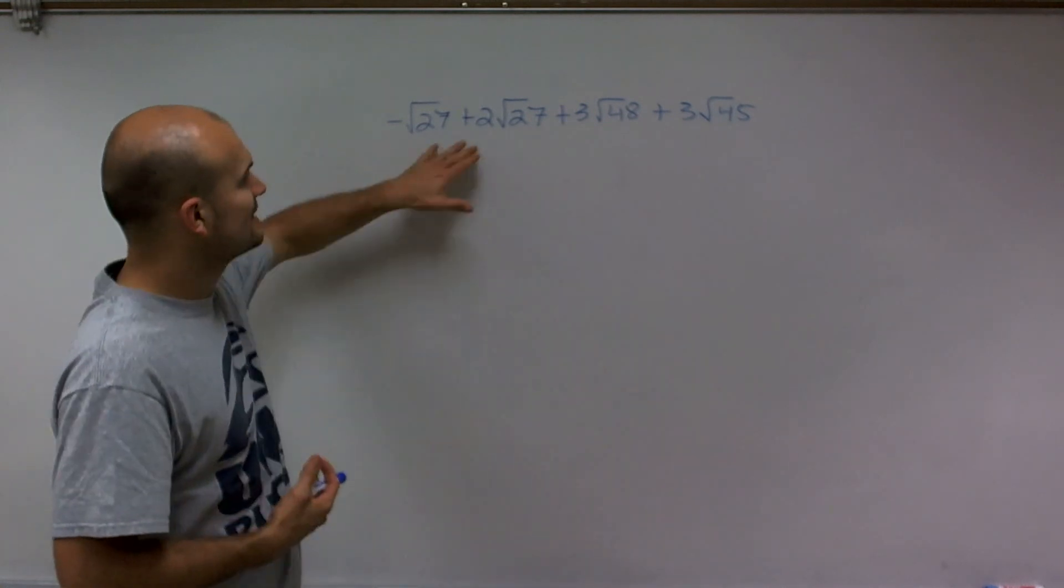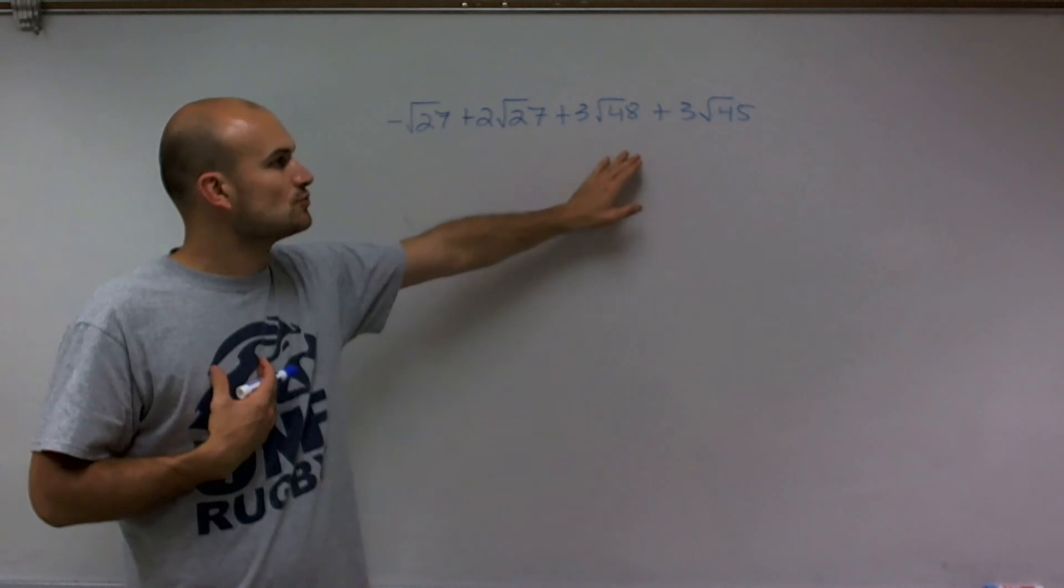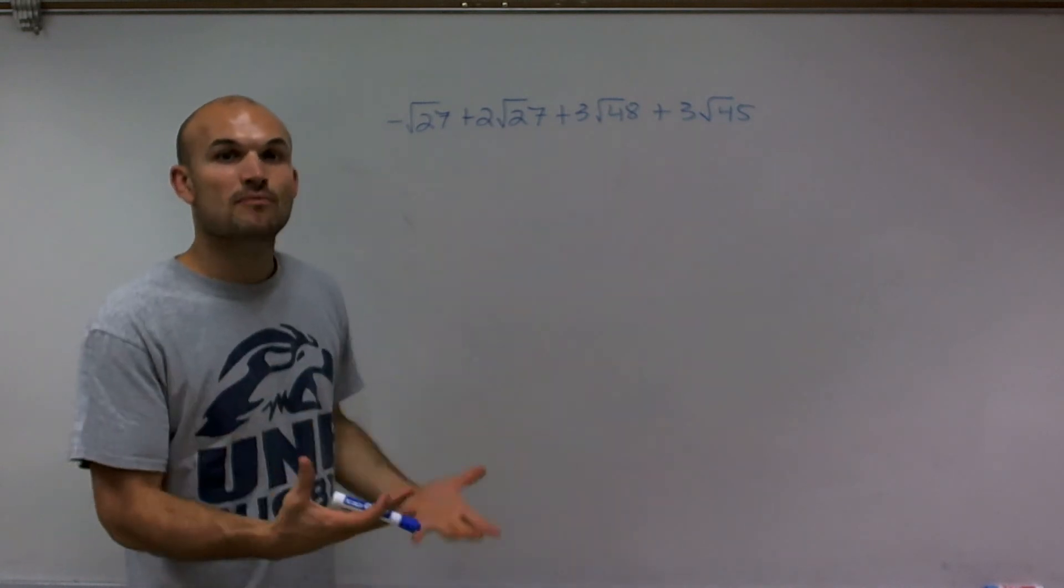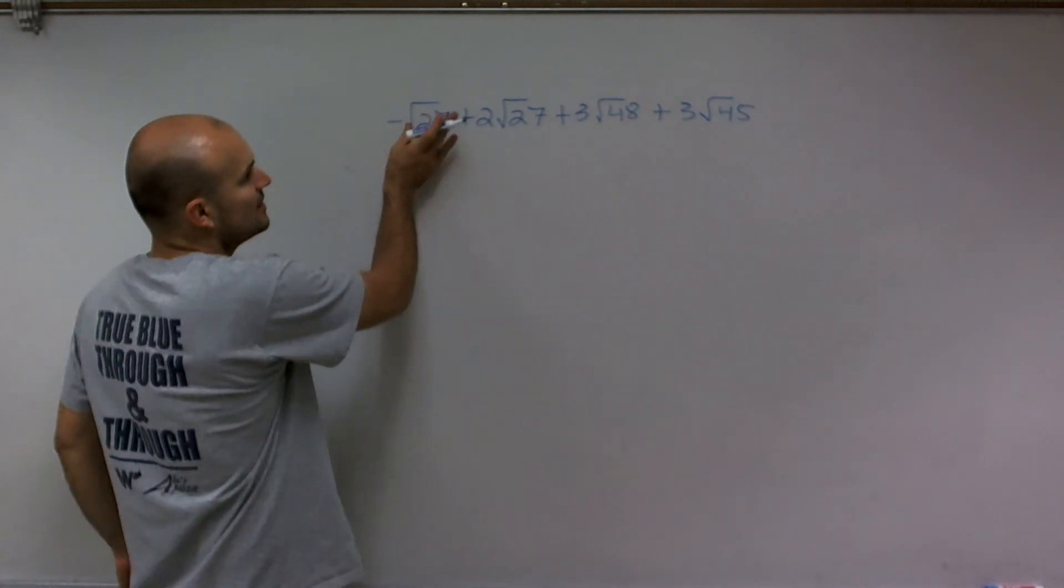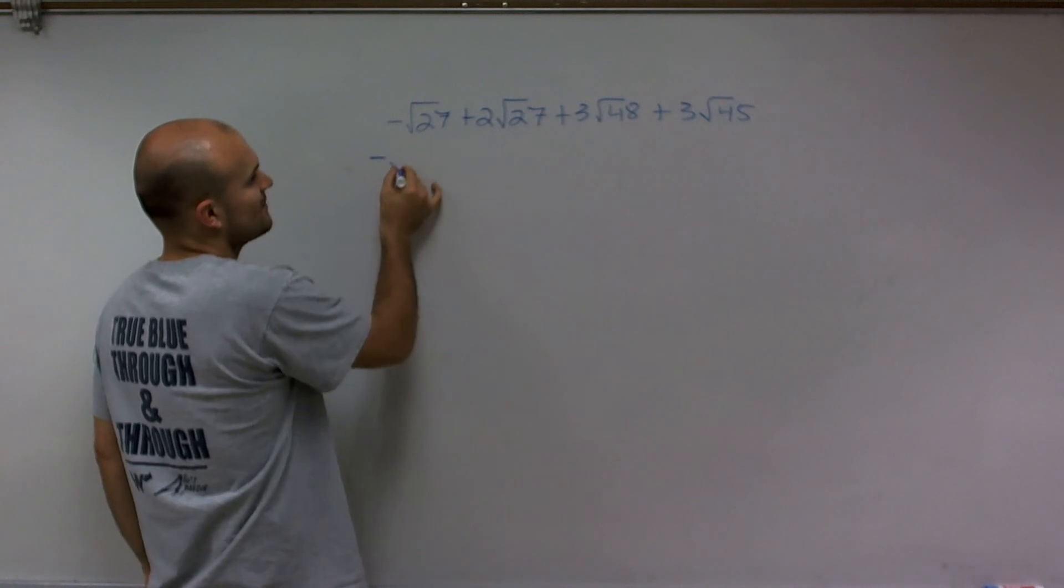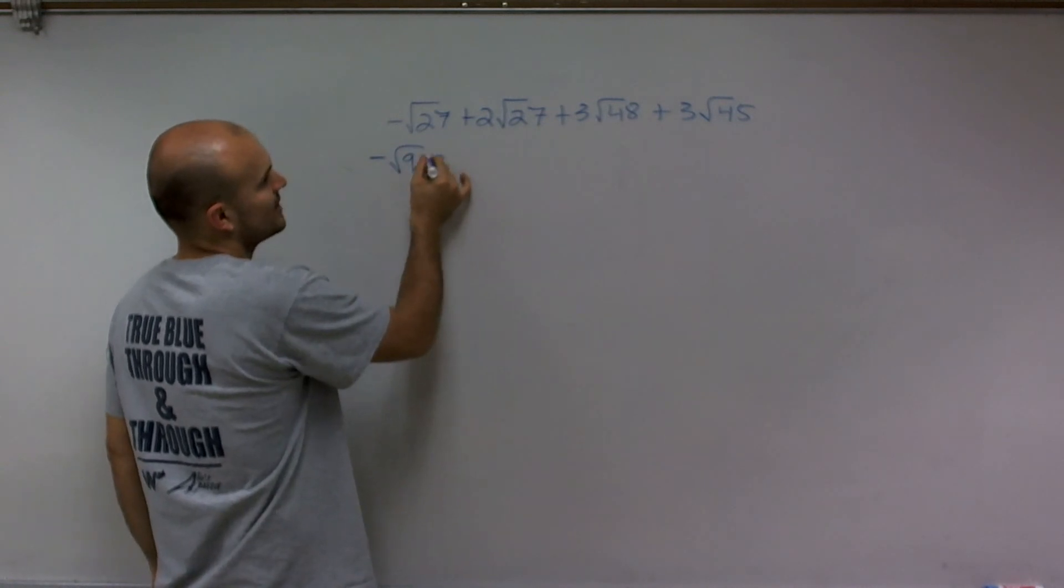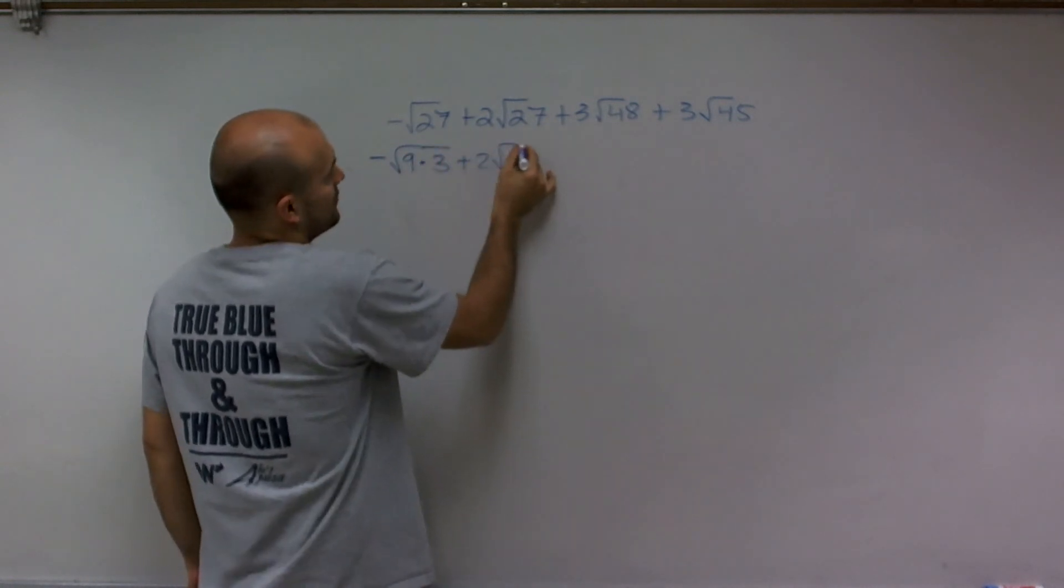So I want to see, can I write each one of these numbers as a multiple of one of the square numbers? And you can see that I can rewrite square root of 27 as 9 times 3. So I'm going to do that for both of them.